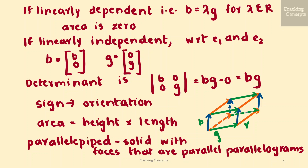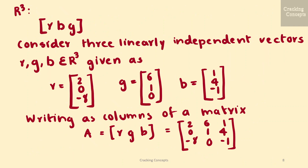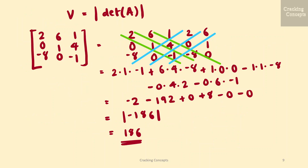In a three-dimensional space, we consider three vectors r, b, g spanning the edges of a parallelepiped — a solid with faces that are parallel parallelograms. The absolute value of the determinant of the 3×3 matrix is the volume of the solid. Thus, the determinant acts as a function that measures the signed volume formed by column vectors composed in a matrix. Consider three linearly independent vectors r, g, b as given here. We'll now write them as columns of a matrix A and then find its determinant using the Sarrus rule.